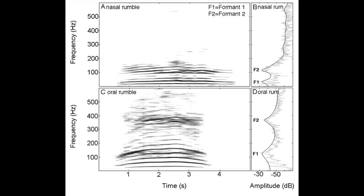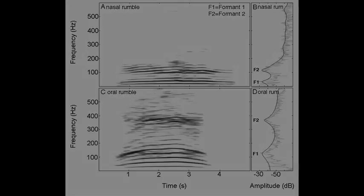In particular, the values of the first two formants reflected the estimated length of the vocal path, corresponding to a vocal tract length of around 2 meters for nasal rumbles and around 0.7 meters for oral rumbles. By rumbling through the trunk, elephants thus lower their formants by around 3-fold.